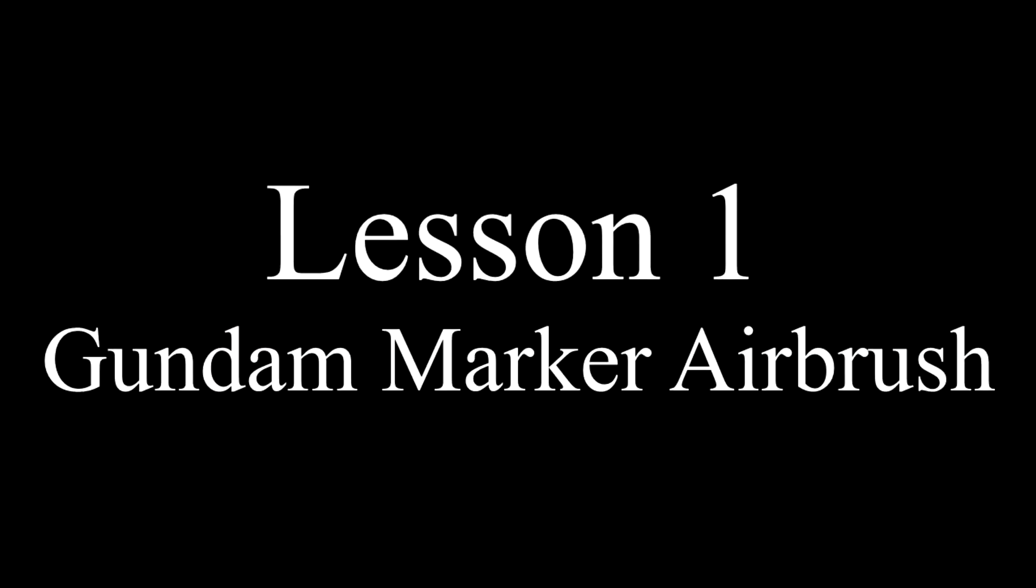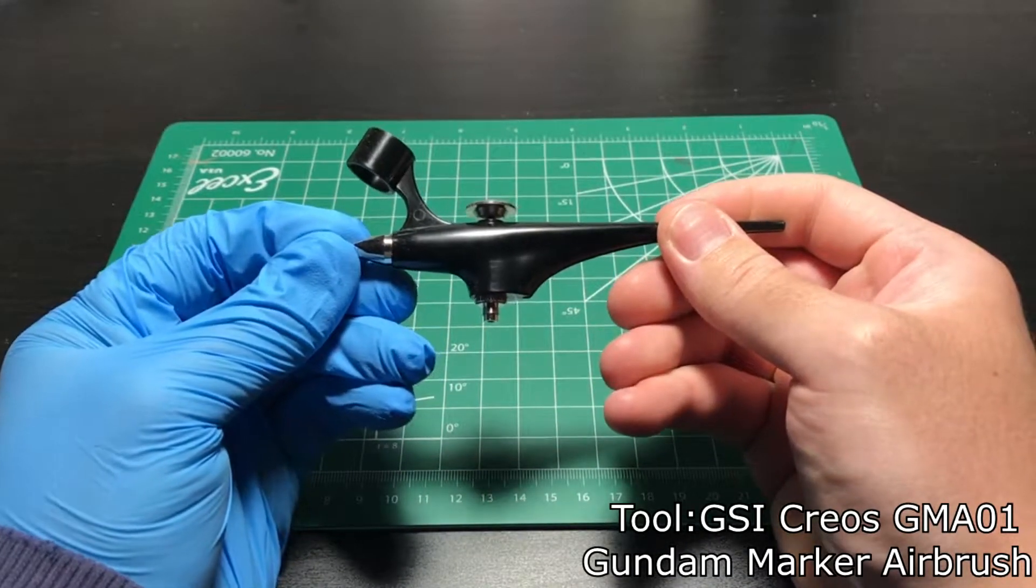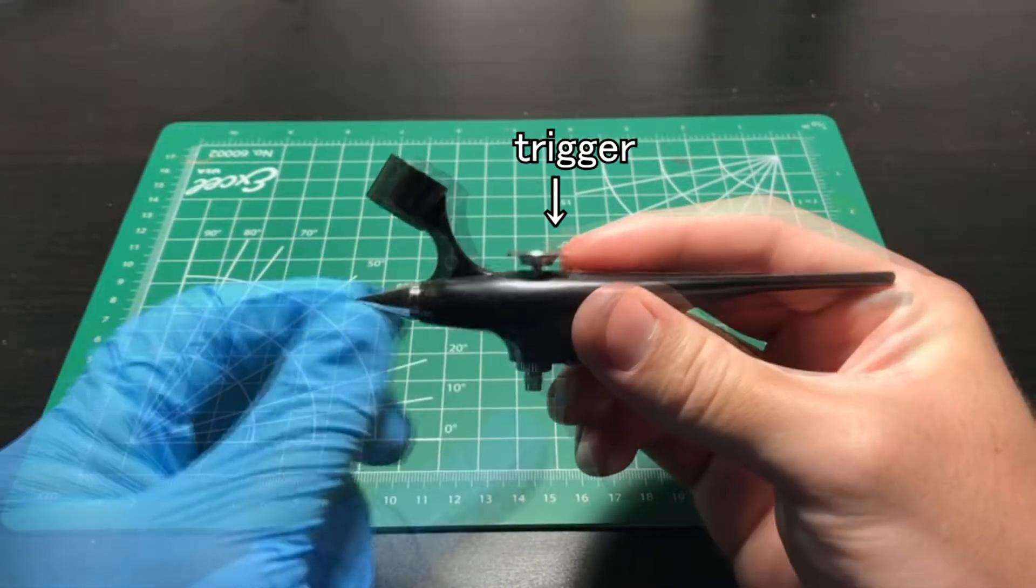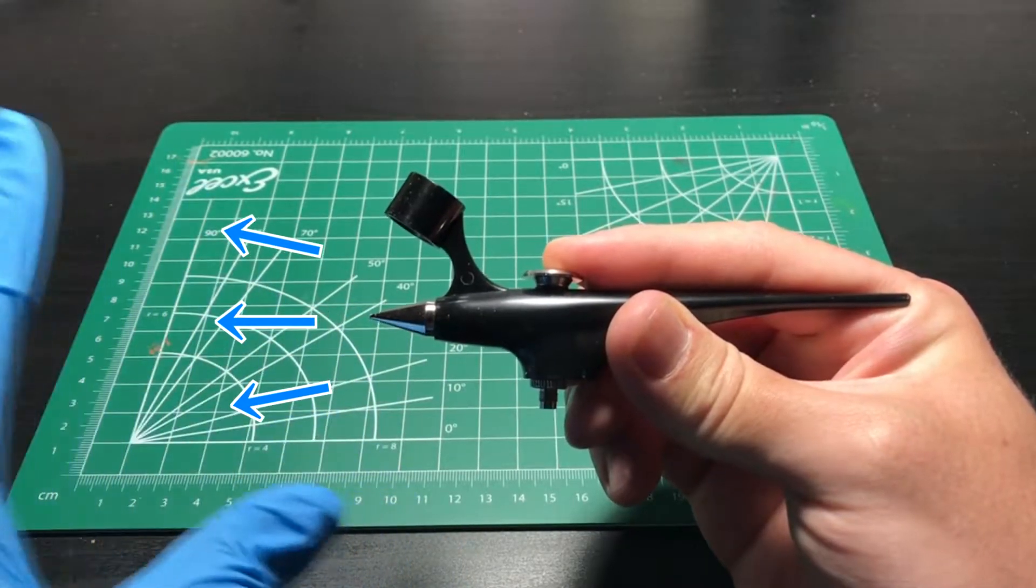Lesson 1: Gundam Marker Airbrush. This is the Gundam Marker Airbrush, which I will refer to as a gun throughout this demonstration. This is the trigger where if you press on it, then it will release the air through the nozzle provided into the gun.